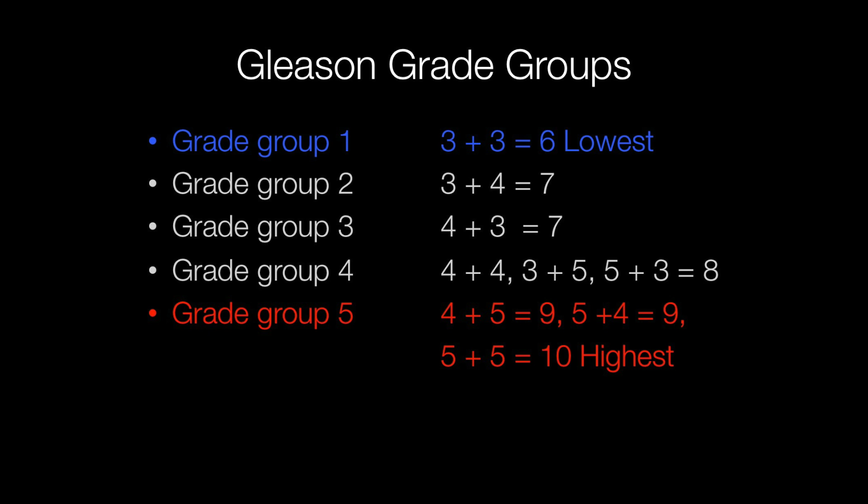Grade group 1 is the best differentiated and the lowest grade group possible, and that is 3+3 equals 6. Grade group 5 is the group with the worst prognosis and the highest grade, and that corresponds to either 4+5 equals 9, 5+4 equals 9, or 5+5 equals 10.